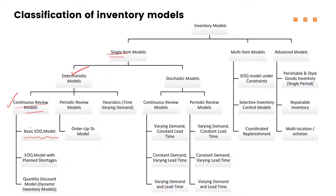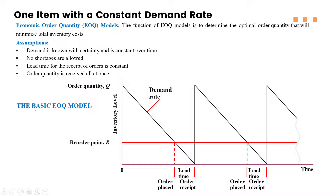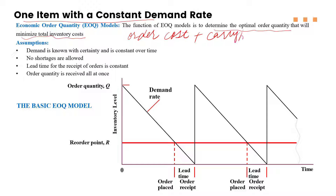In the economic order quantity model, we want to find out such an optimum order quantity so that we can minimize the total cost. What kind of cost? We want to minimize the ordering cost plus the holding or carrying cost — the inventory holding cost. The sum of these gives us the total cost of the inventory.